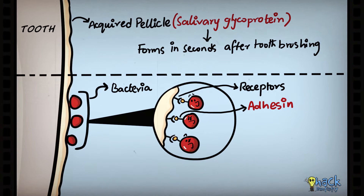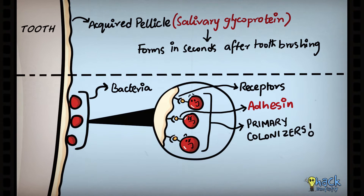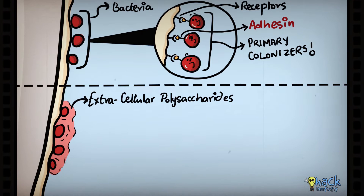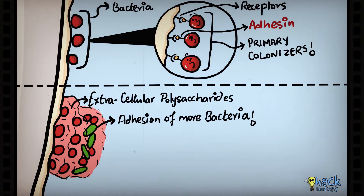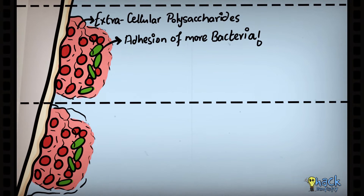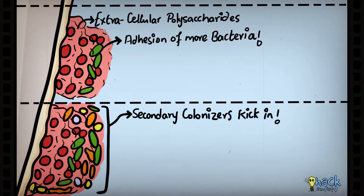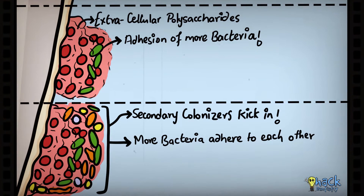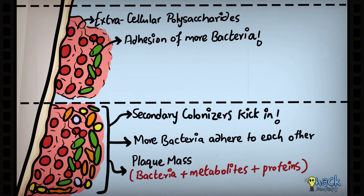These initial bacteria are called primary colonizers in the dental plaque. Extracellular polysaccharides secreted by bacteria help in adhesion of more bacteria on the existing bacteria in the plaque. Secondary colonizers kick in afterwards and bacteria continue to grow and adhere to each other. Bacteria along with their metabolites, cellular debris and salivary proteins accumulate and together form the plaque mass, which continues to grow and mature.